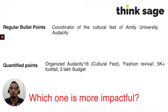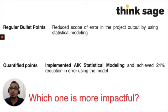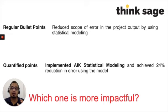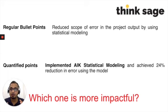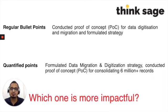Here is another example: it says you reduced the scope of error — but by what percentage, by what margin? Without a number there is no impact in that line. You can change that by mentioning the exact reduction. For instance, you used a model that reduced the scope of error by 24%. That is a great number to showcase because it shows you made a real, measurable impact.